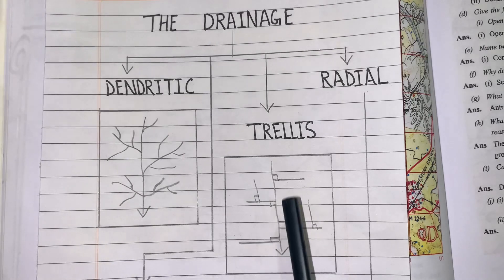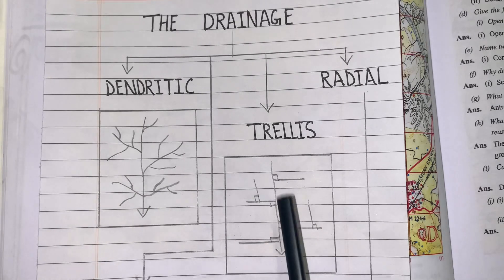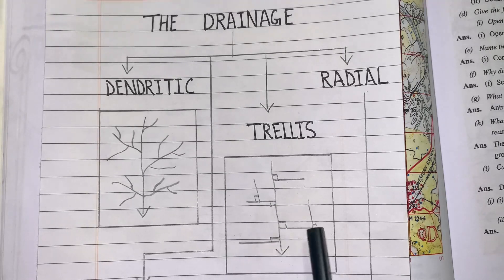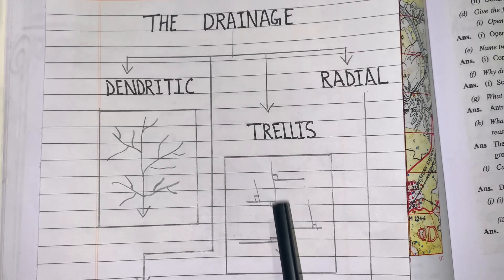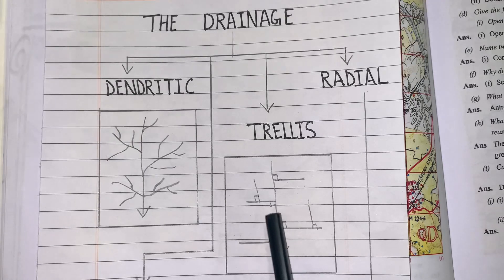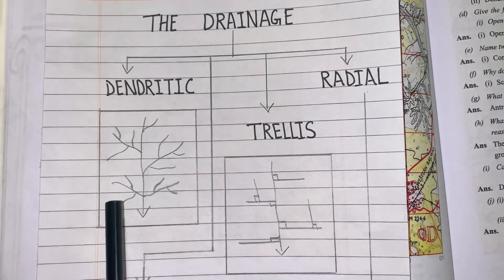The second one is trellis drainage pattern. Here also you will see the main river is flowing — with the help of the arrow I have shown you — and tributaries and sub-tributaries are joining the main river. But here they are joining at a 90-degree angle. This is the main difference between dendritic and trellis drainage pattern.